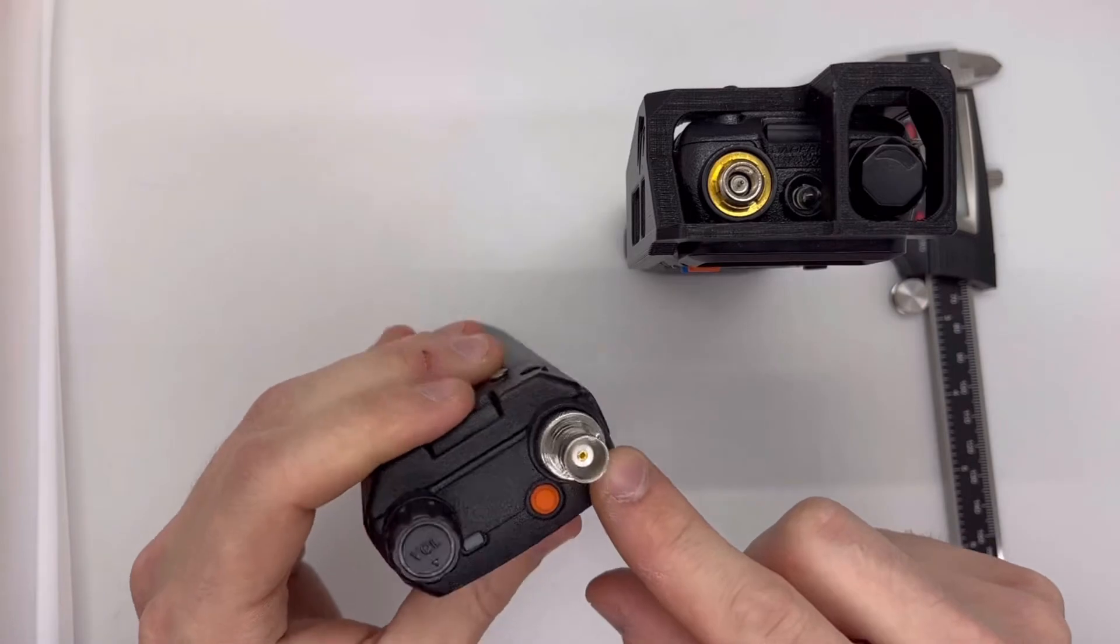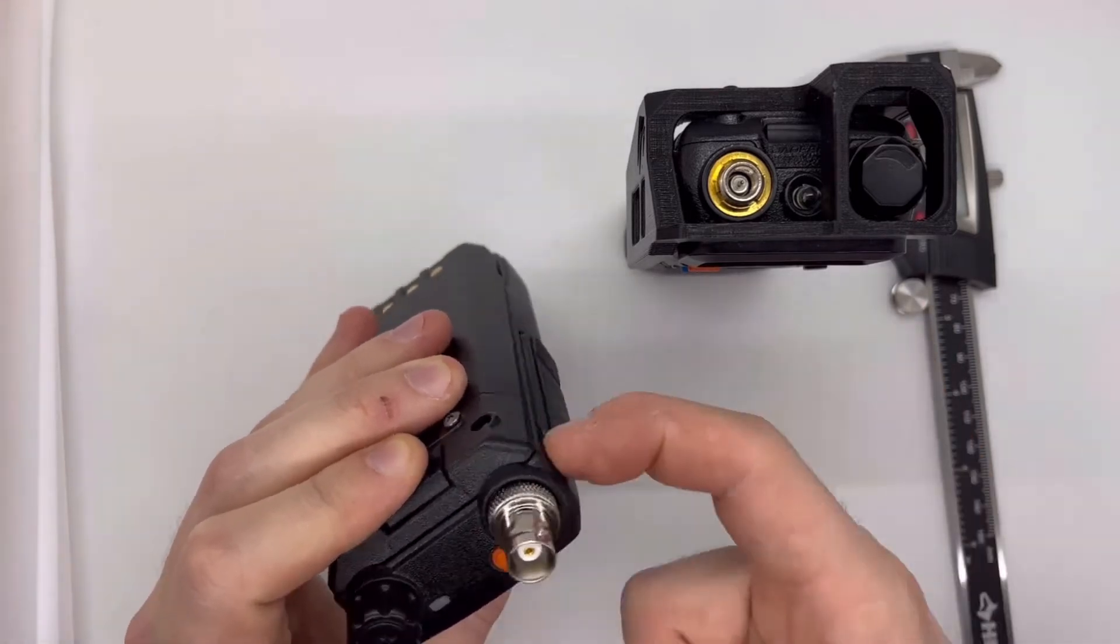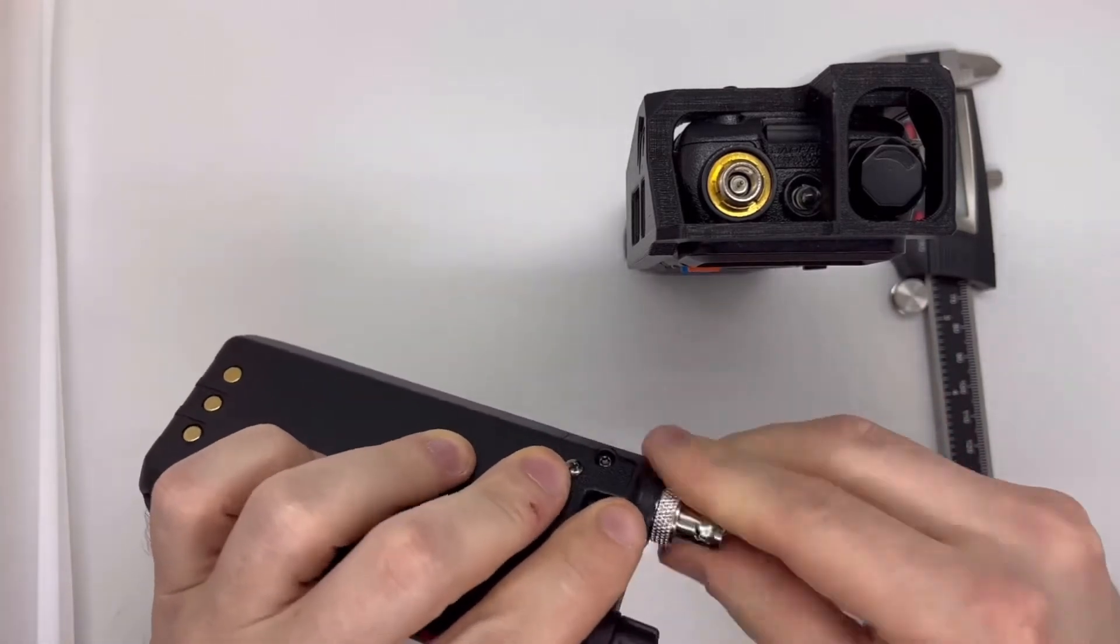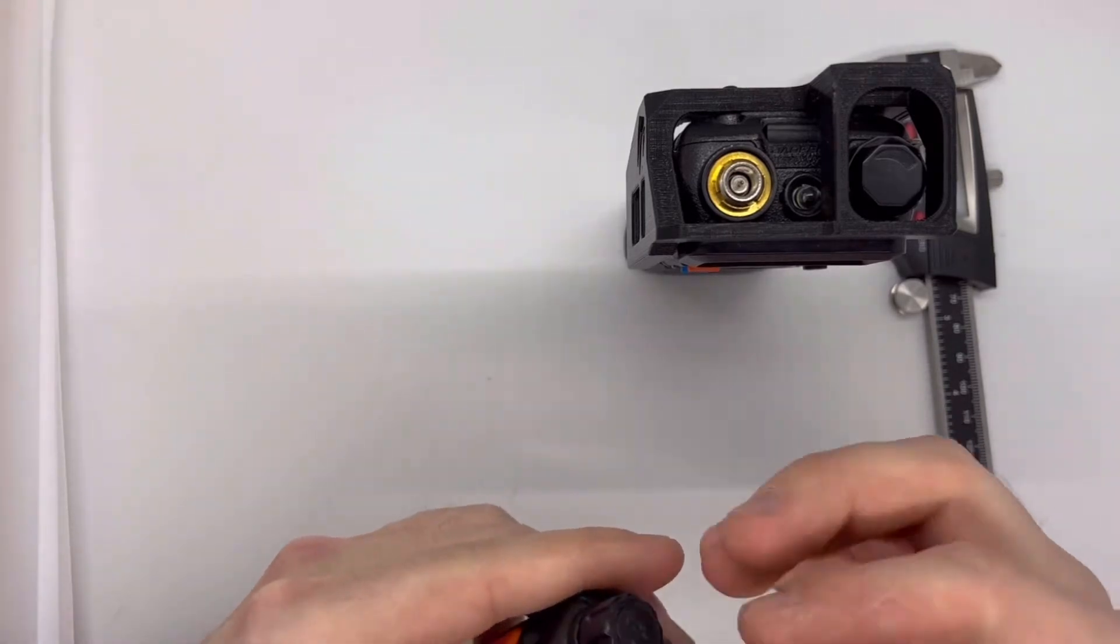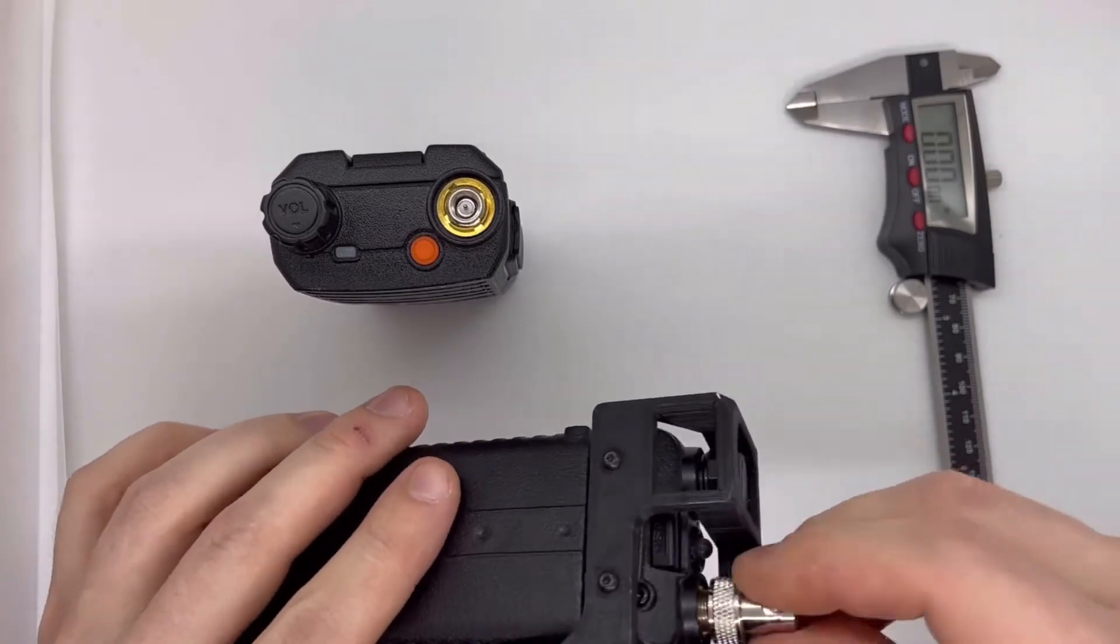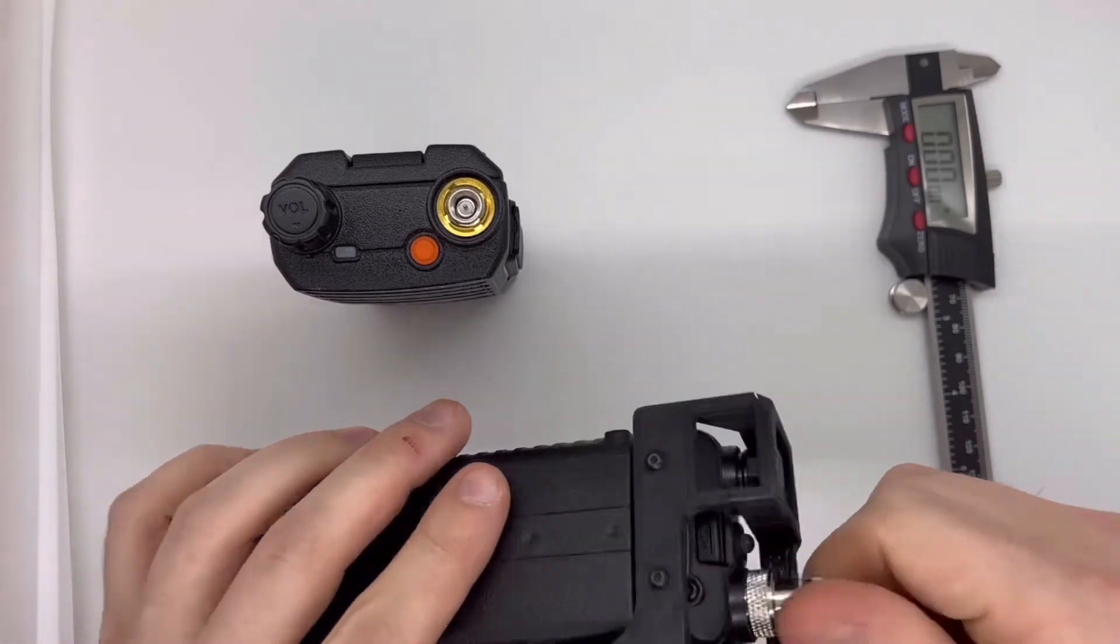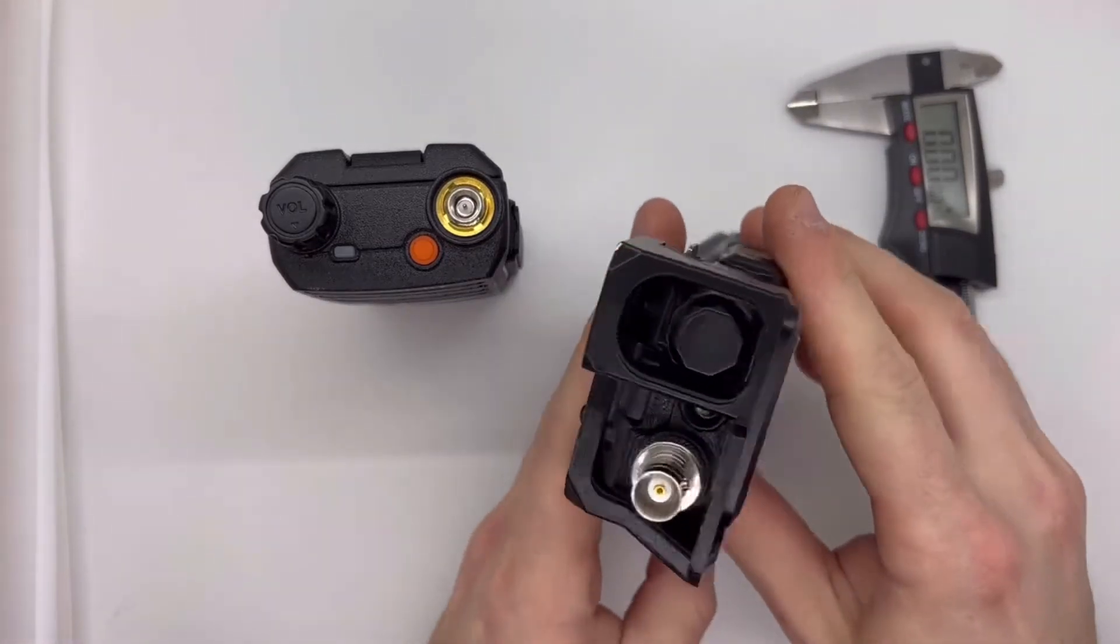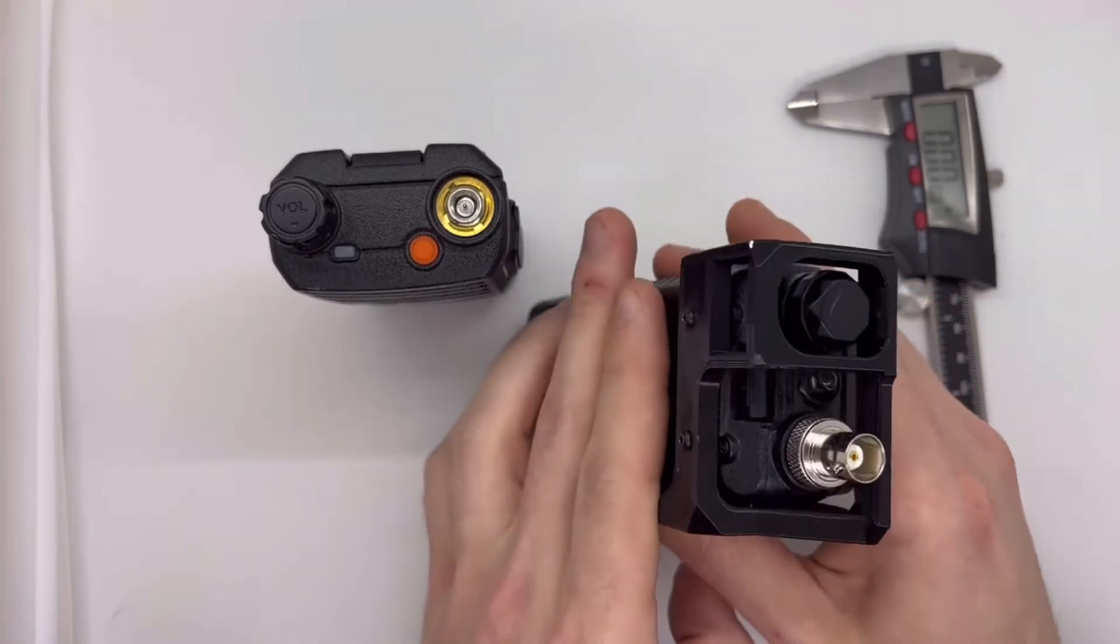You want that wall to be very close to the walls of the radio port. It'll keep the threads protected. If you bump it, it'll also prevent debris or anything falling in there. This is of course a UV-5R and it fits very well in there. You don't see any gap.